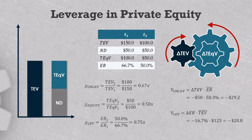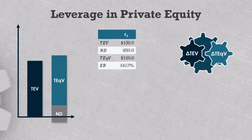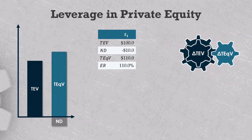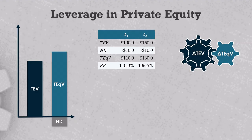Now let's shift to a growth equity deal. In this case, your enterprise valuation is smaller than total equity because you have excess cash on the balance sheet to fund growth initiatives, and this provides a negative net debt number. As before, we'll grow the company by 50%, but keep the net debt constant at minus 10.